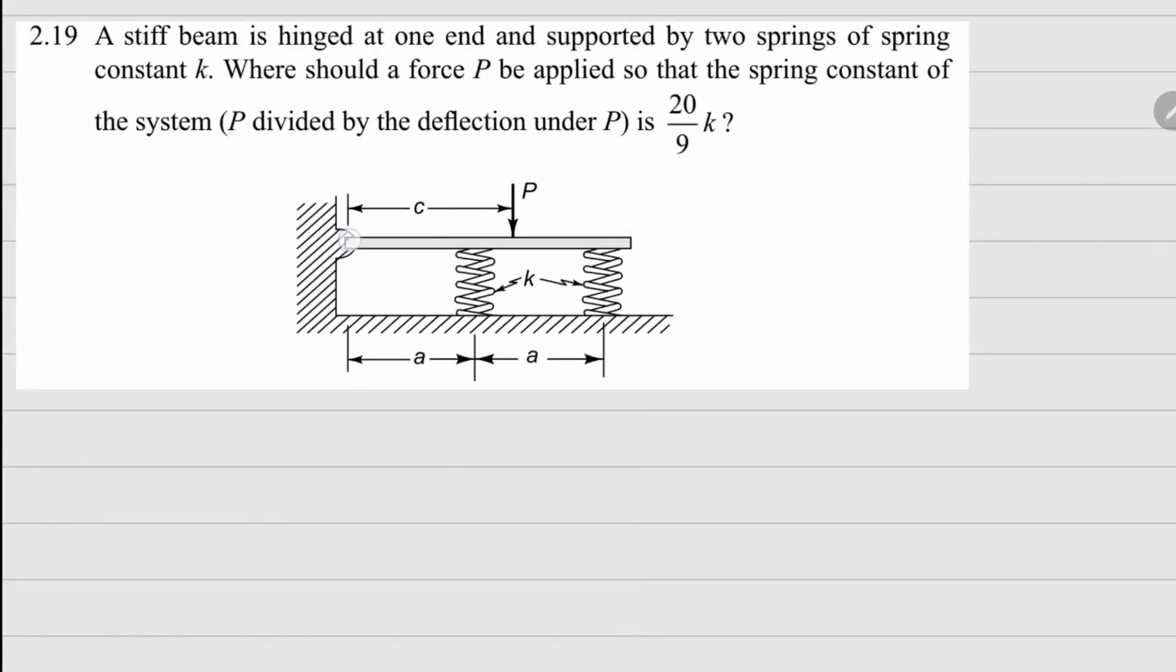This one is problem 2.19. Here we have a stiff beam which is hinged at this point and is supported by these two springs. Both have the same constant k. There is a force P applied at a distance c from here, and we need to figure out this distance c so that the effective spring constant is 20k over 9.